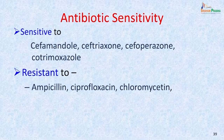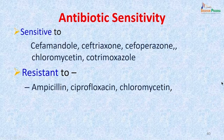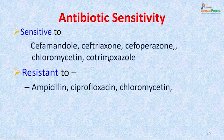The isolate was confirmed as Salmonella Typhi by slide agglutination: polyvalent O antiserum was positive, group D or O9 antiserum was positive, poly-H antiserum was positive, and Hd antiserum was positive. Antibiotic sensitivity showed the organism was sensitive to cefamandole, ceftriaxone, cefoperazone, and cotrimoxazole, but resistant to ampicillin and ciprofloxacin. The only effective drugs for treatment were therefore ceftriaxone and cotrimoxazole.